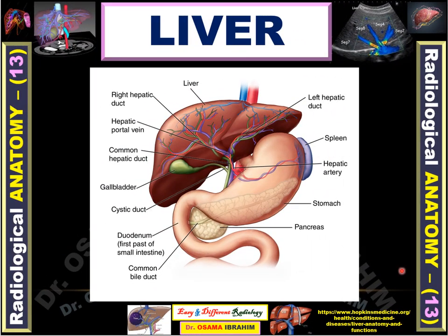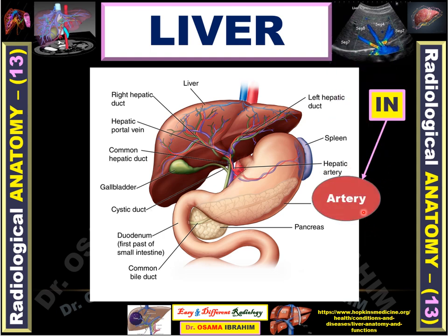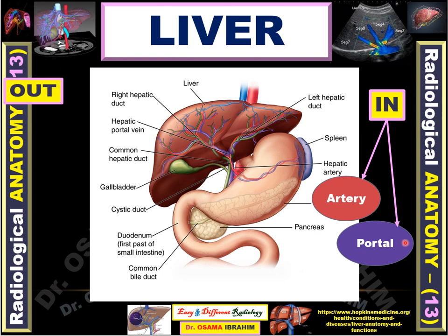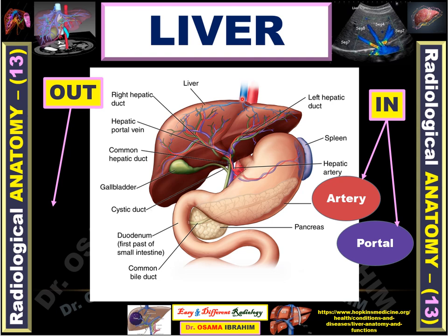The liver is shown here in this diagram as a structure that lies in the right upper quadrant. This structure has inflow represented by the hepatic artery, and inflow also from the portal vein, and outflow as the hepatic veins, which drain through the inferior vena cava, and also the biliary tree, which drains through the second part of the duodenum through the common bile duct.